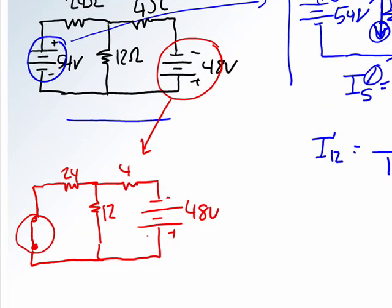So now the 48-volt source is going to produce a current that's going that direction, and once it gets to this node, it's going to split up between the 4 and the 24, which are now in parallel. In series with a 4.